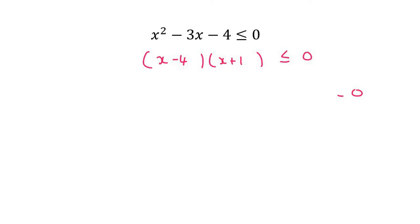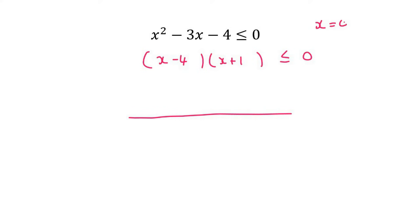You need to draw a number line, and you need to ask yourself: if this was an equal sign, then what would your two answers have been? Well, you would have said x equals 4 and x equals negative 1. So you go put those numbers on your number line.